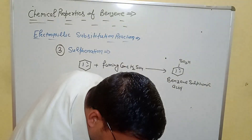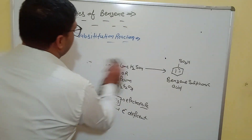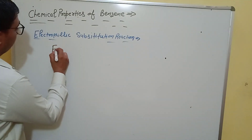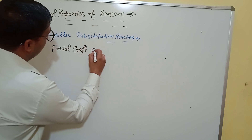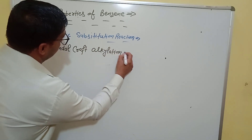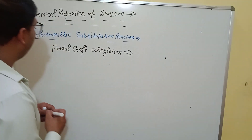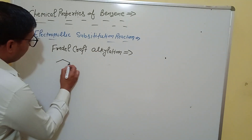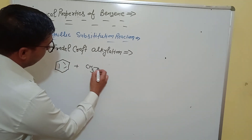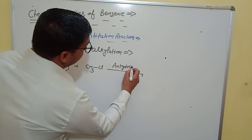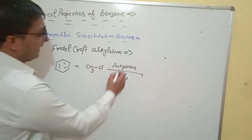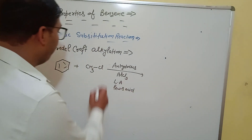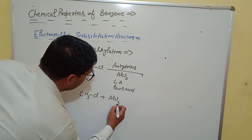The fourth reaction we study is Friedel-Crafts alkylation. It is another type of electrophilic substitution reaction in which a benzene molecule reacts with an alkyl halide in the presence of anhydrous aluminium chloride (AlCl3). Here, aluminium chloride acts as a Lewis acid.